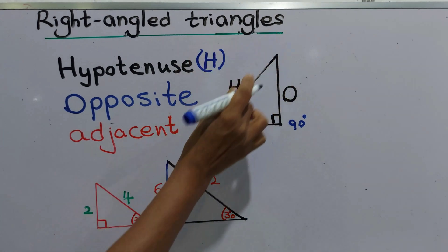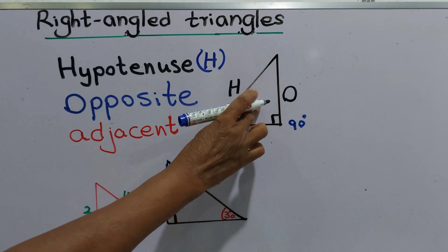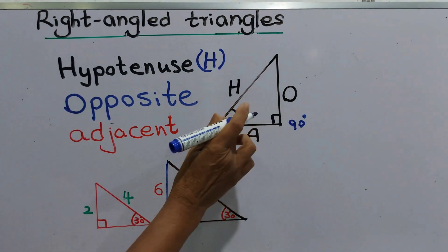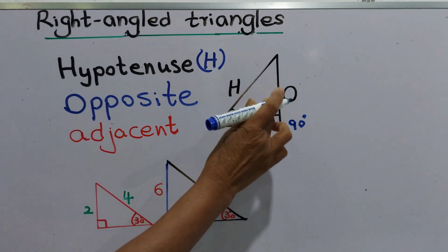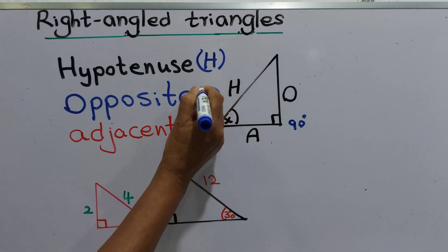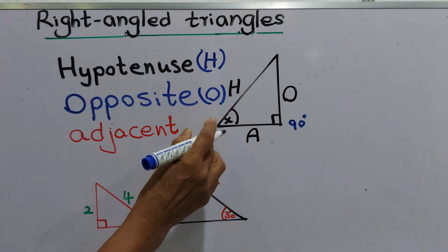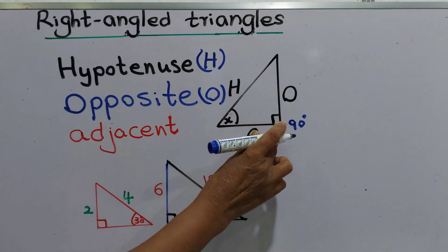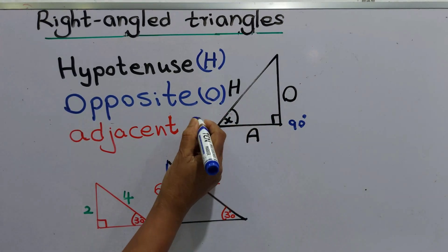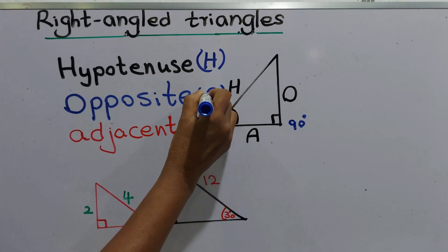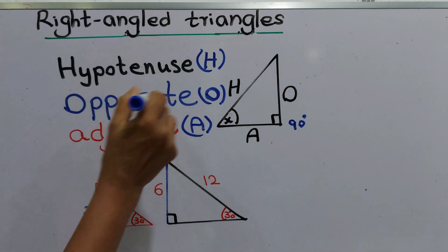The hypotenuse is named H — that is the longest side of the right angle triangle. The side opposite the marked angle is called the opposite, named O. The other remaining side is called the adjacent, named A.